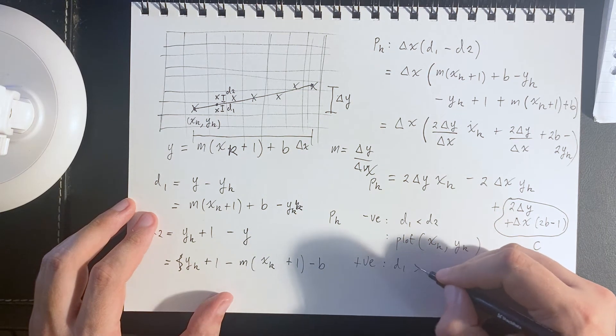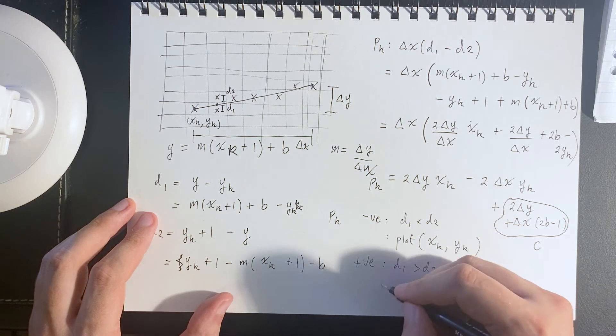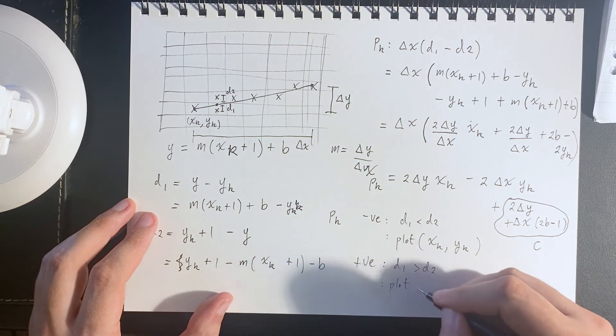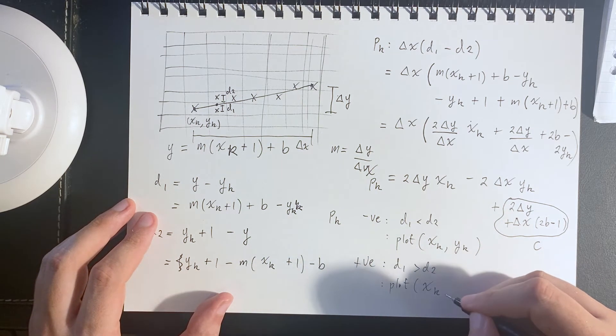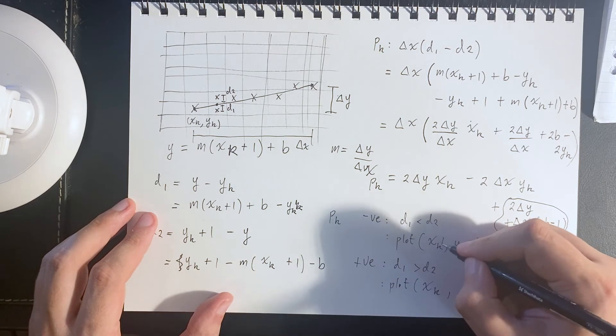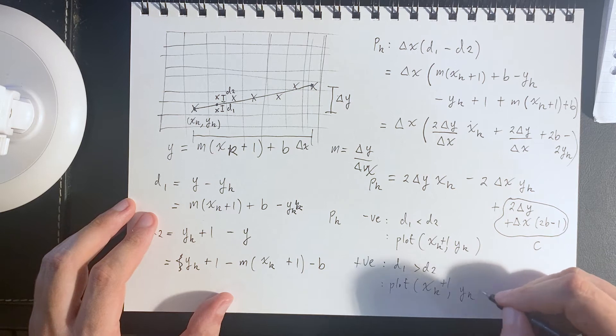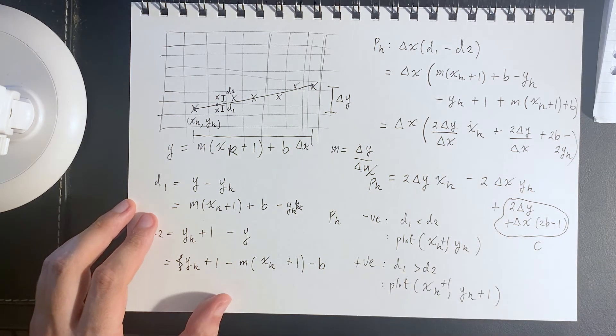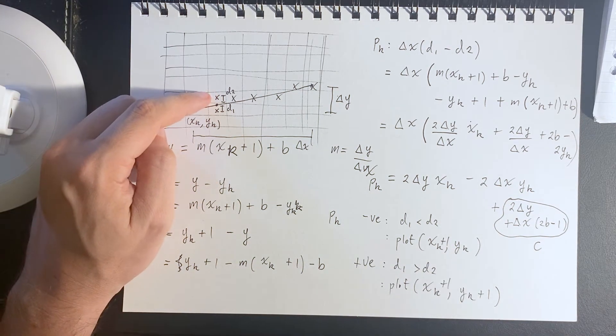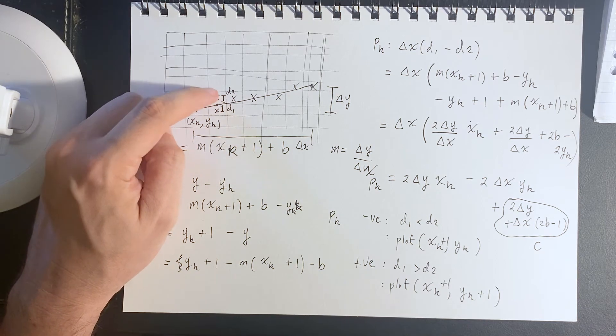If it's positive, then distance one is greater than distance two. In other words, plot x_k plus one and go up by one. So d2 was smaller, so plot the point above.